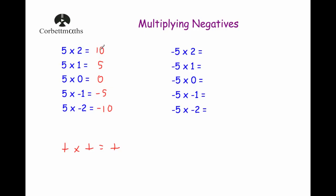So there are the answers: 5 times 2 is 10, 5 times 1 is 5, 5 times 0 is 0, 5 times negative 1 is negative 5 — so a positive multiplied by a negative is equal to a negative. And 5 times negative 2 is negative 10, confirming that a positive times a negative is equal to a negative.